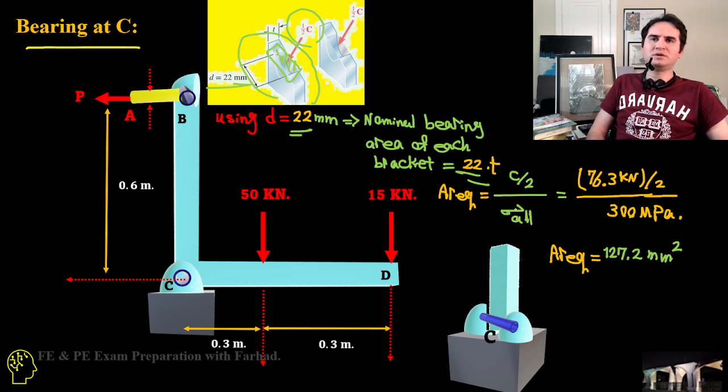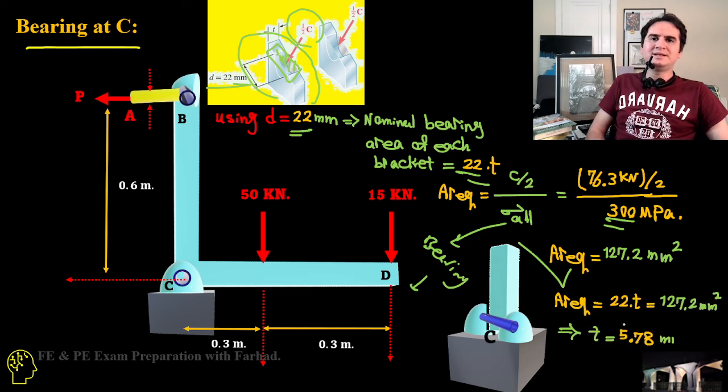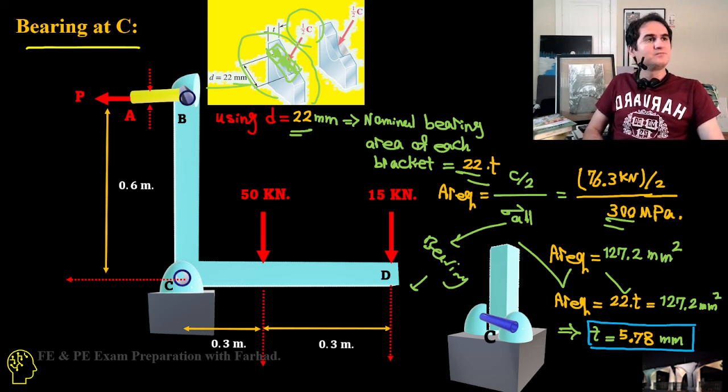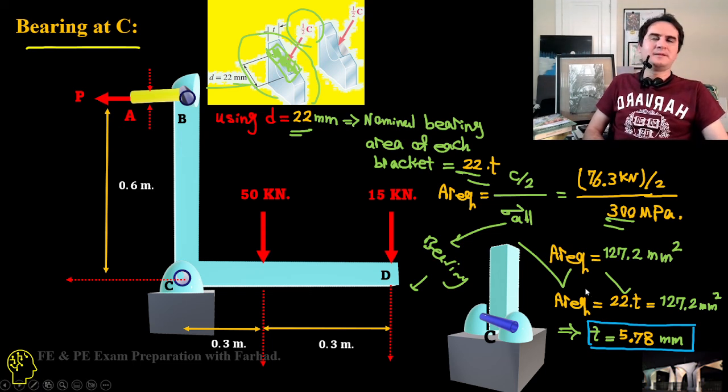That's C over 2 because each of them handles half of the force. C over 2 over sigma bearing, that's 76.3 over 2 over sigma bearing stress which is provided in part C of the problem statement, gives us an area of 127.2 mm squared. That's 22 times T, which simply gives us a thickness of 5.78 mm. That was a solution for a problem which is a combination of normal stress, shearing stress, and bearing stress in design of a double pin control rod. Thank you.